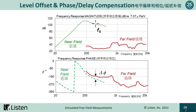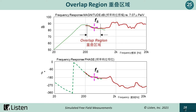First, the near-field response must be level and delay compensated due to different microphone positions. Second, a transition or splice frequency needs to be chosen that is valid for both the near-field and the far-field measurements. Once the responses are compensated, there should be an overlap region where both curves look similar. If the speaker is too big and the room too small, there may be no overlap region because the time-windowed far-field measurement does not extend low enough in frequency. Once the transition frequency is selected, a frequency window is applied — below for the near-field measurement and above for the far-field measurement — and then the two curves are spliced together at the transition frequency, both in magnitude and phase.